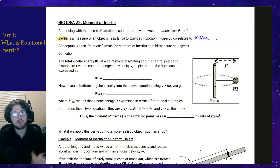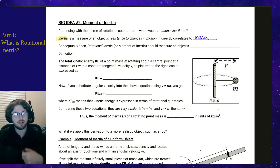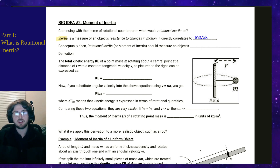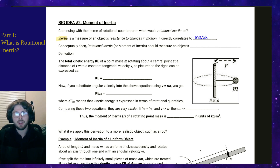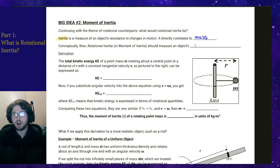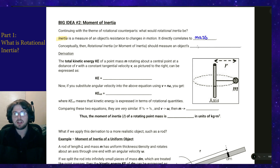A bus is going to be harder to change the motion of than, let's say, a ping pong ball. So when we're transitioning into the rotational realm of things, rotational inertia — or more generally called moment of inertia — should measure an object's resistance to changes in its rotational motion.